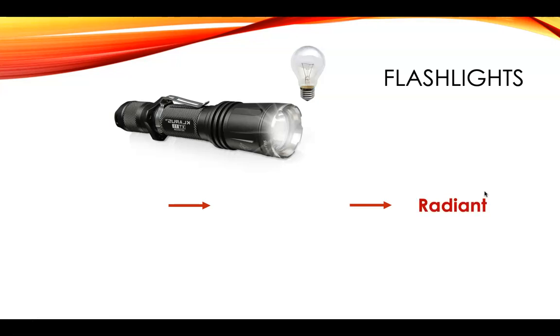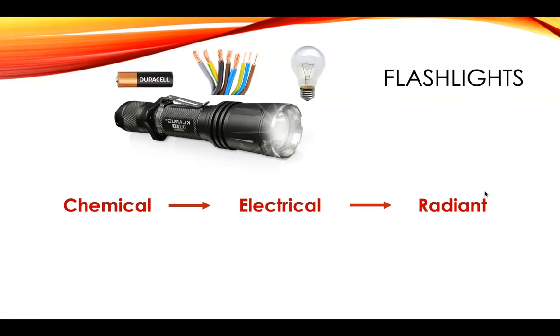Okay, what powers a flashlight? Well, you have to put in batteries. Batteries are a form of chemical energy. So what connects the two? Well, there's wiring inside and that means electrical energy. So this is your completed energy transformation or energy chain for a flashlight.